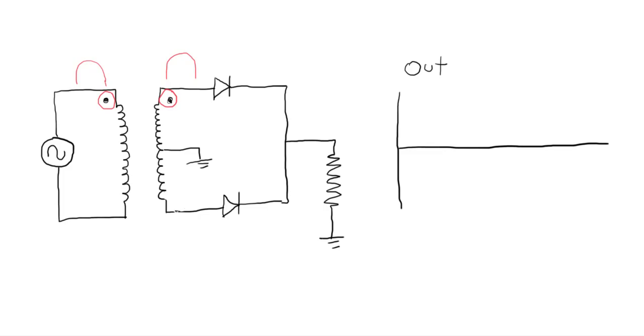The part that's a bit weird is the fact that we've grounded the center of the secondary, meaning this becomes the reference for our measurements. So if we're referencing here, measuring up this way, then we're measuring from ground to positive and it's going to be the same phase. But if we're measuring down, ground is now at the top, which means this bottom will be inverted, or the opposite way around.